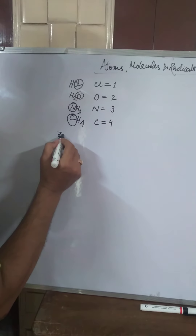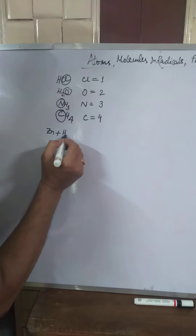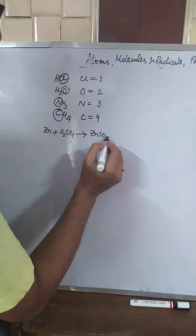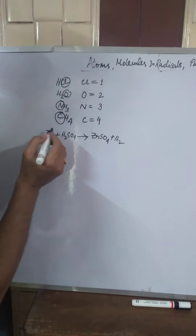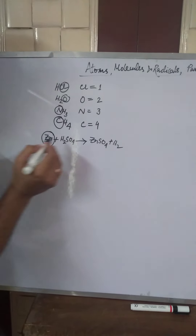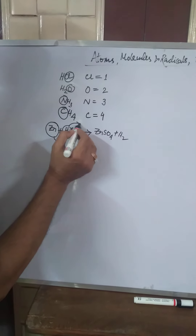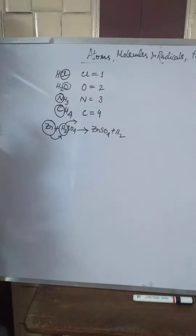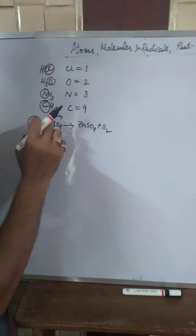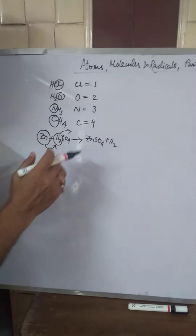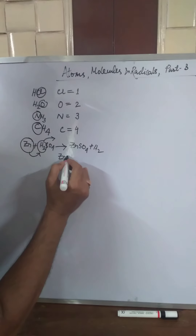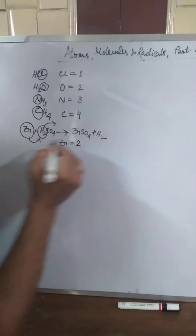Now think about this example. Zinc, when it reacts with dilute sulfuric acid, it forms zinc sulfate and hydrogen gas. You see that one atom of zinc displaces two hydrogen atoms. This is an example of a displacement reaction. So here, zinc displaces two atoms of hydrogen from sulfuric acid. How many hydrogen atoms are displaced by one atom of zinc in this reaction? Two. And that's why the valency of zinc is two.